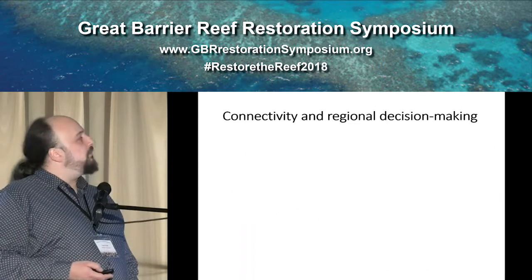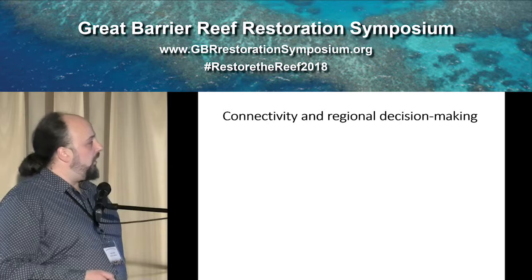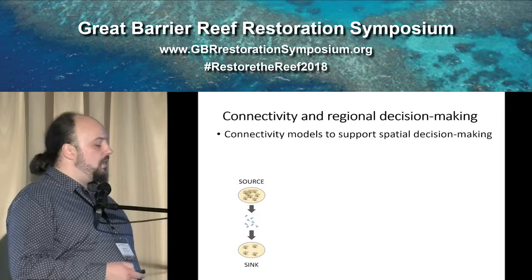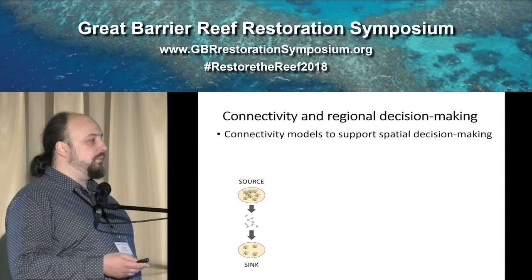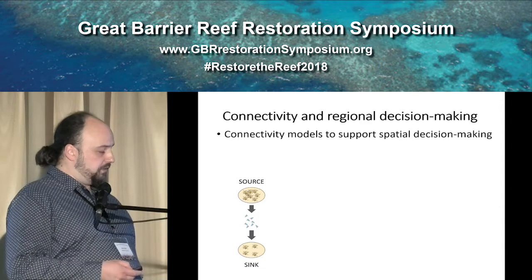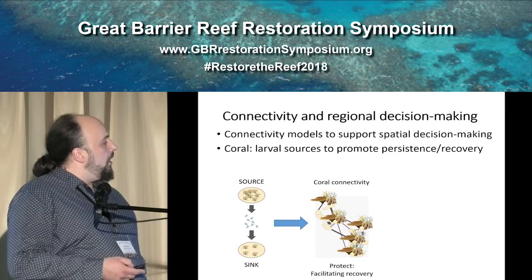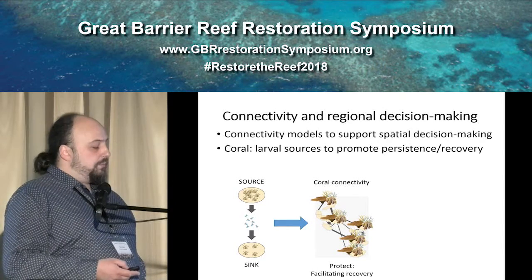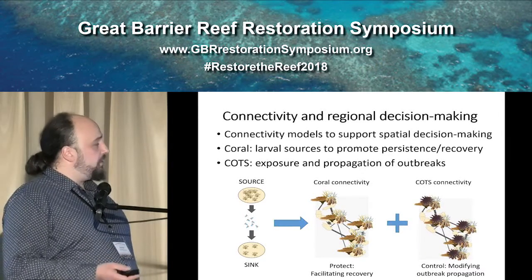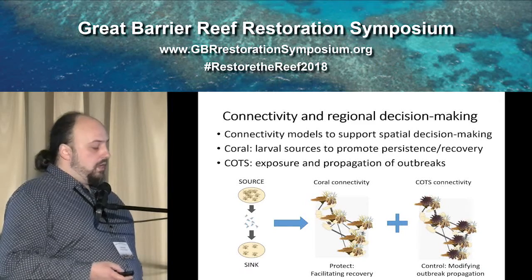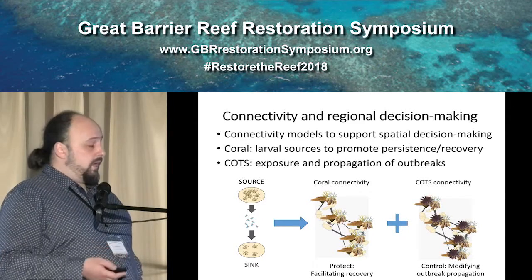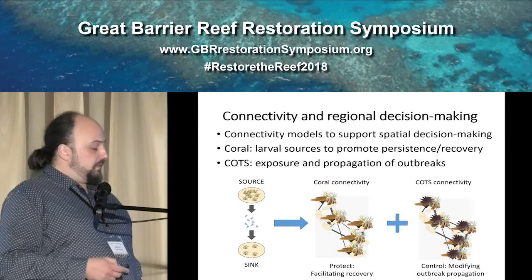When it comes to using connectivity for decision-making, we can use these source-sink relationships to identify which reefs are going to be regionally more important as sources or sinks of larvae — and we're most interested in sources. For coral, we are looking for good sources of larvae that are going to promote either persistence or recovery. For COTS, we're looking at both exposure — so the reefs that are going to be exposed to COTS larvae — and propagation — so the reefs that are likely to spread the outbreaks.